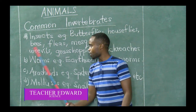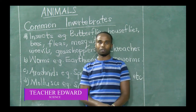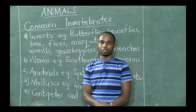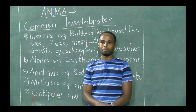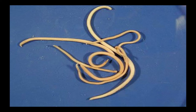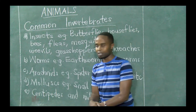Another common invertebrate is worms. Examples of worms include tapeworms, earthworms, and many other types. Worms are also invertebrates.